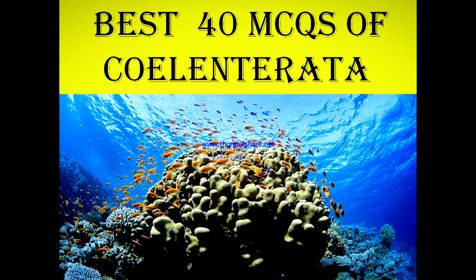The two layers are ectoderm and endoderm. Ectoderm is the layer that makes up the cells outside of the body, and endoderm is the layer which forms the inner lining of the body. They have a body cavity known as coelom. The body is radially symmetrical. Digestion is both intracellular and extracellular types.